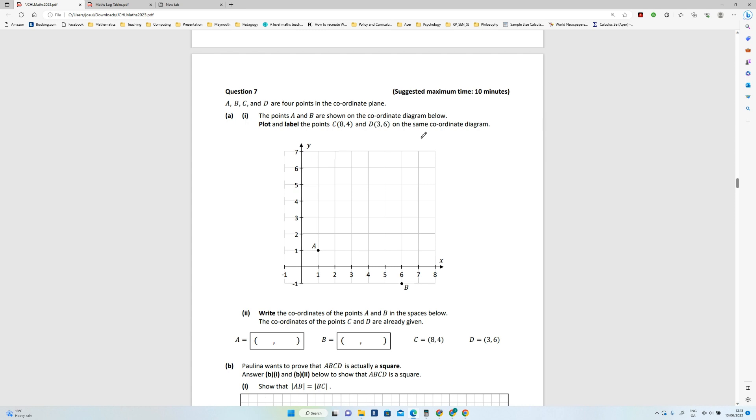So C is eight comma four, so that's eight on the x-axis and four up. Okay, so that is C. D is three on the x-axis and six up, which is there. So that is point D.